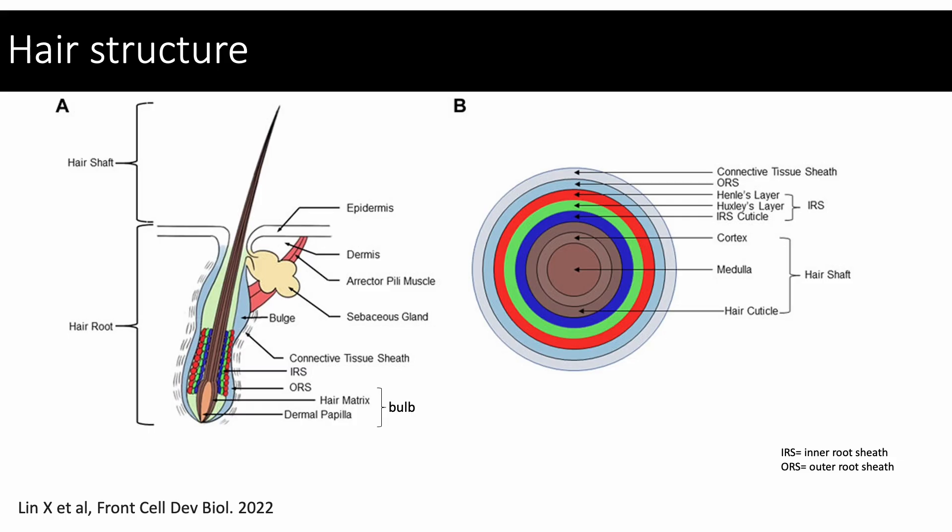Hair structure. Diagram A shows a terminal hair, which can be broadly divided into two parts: the hair shaft and hair root. The hair shaft lies above the epidermis and the hair root underneath it. It is important to be aware of a few key structures which make up the hair root, including the bulge region. The bulge region is the thickened area of the follicle wall, and this is where the stem cells reside.